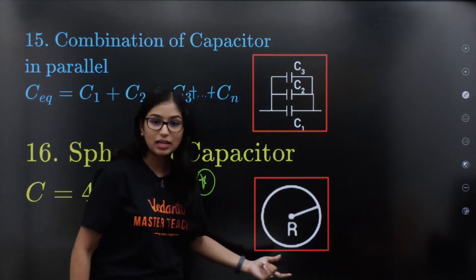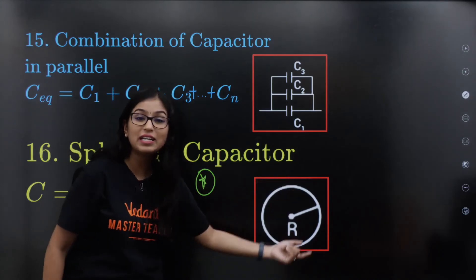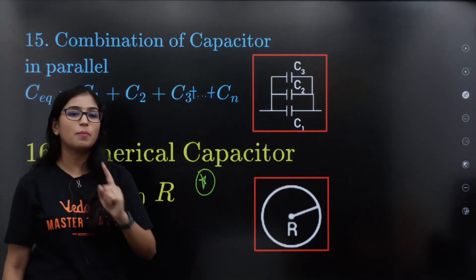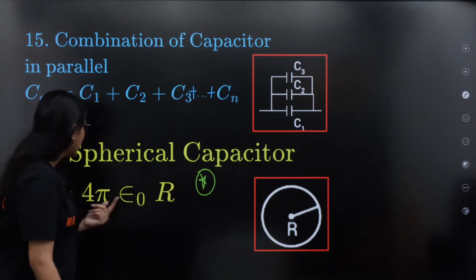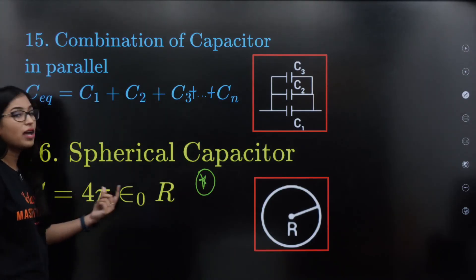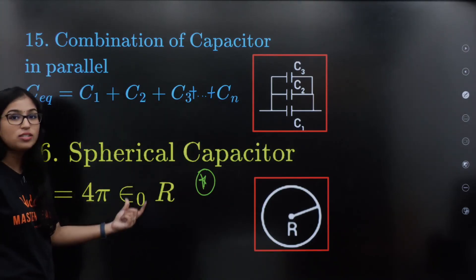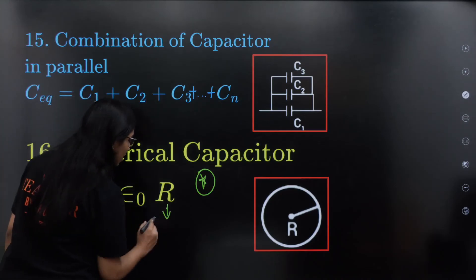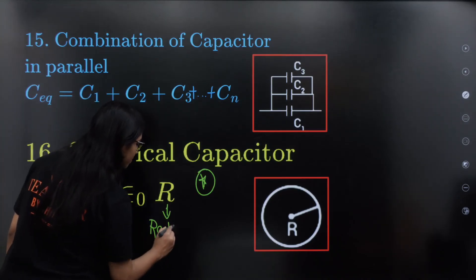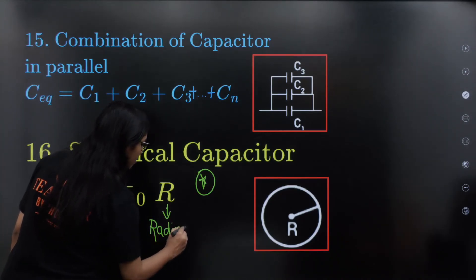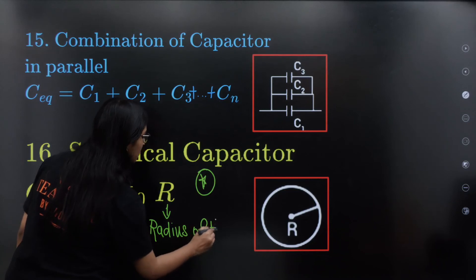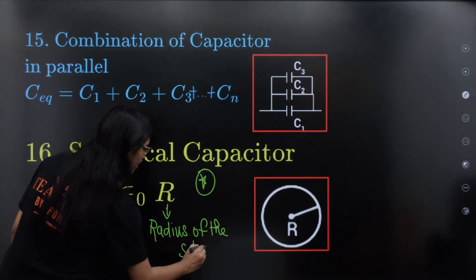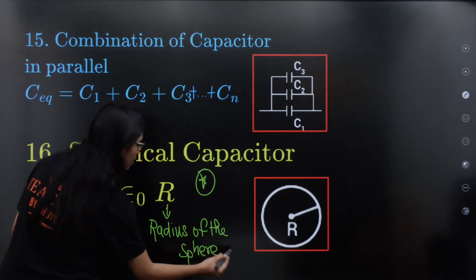Spherical capacitor: capacitance C = 4πε₀R, where R is the radius of the sphere.